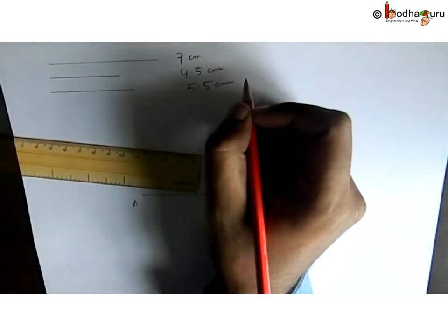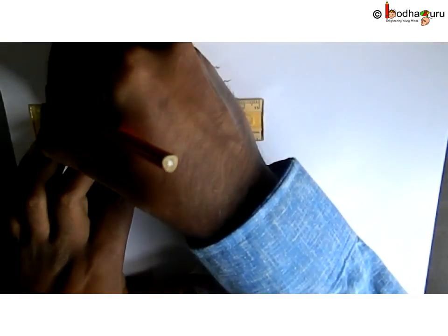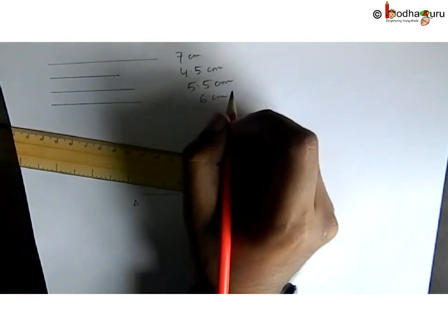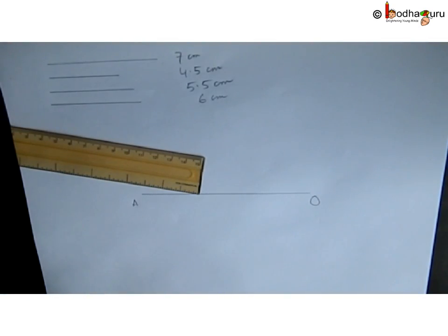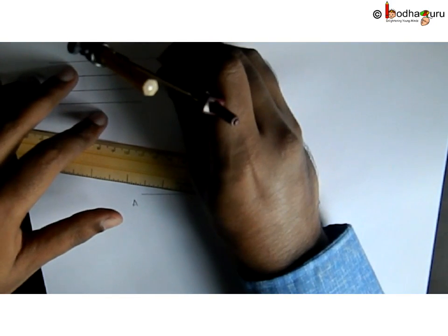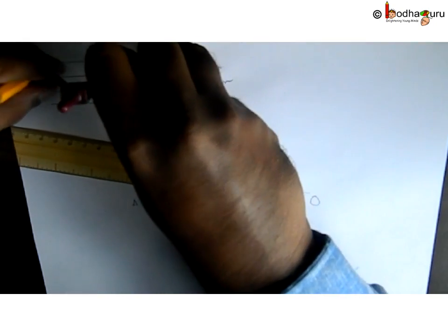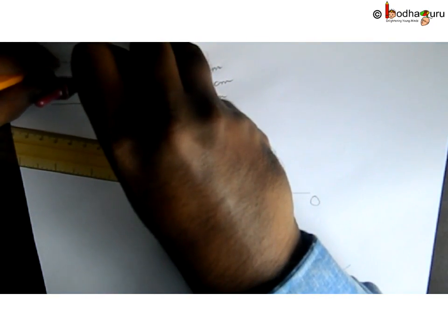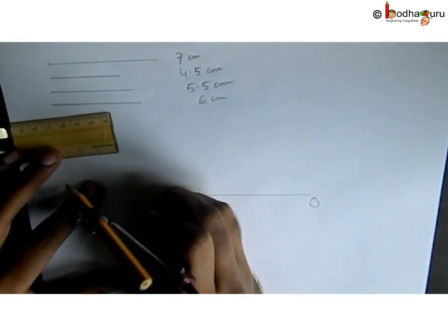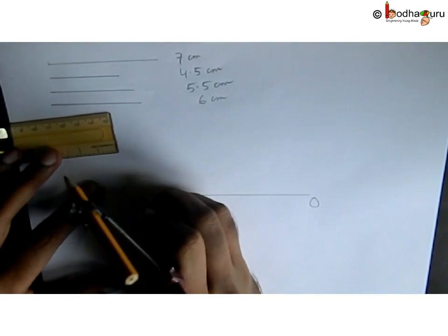These will act as the reference lines. We draw this thing at one corner of the paper. Now we measure 7 centimeter line segment using compass from this reference. Let's put the needle at A and make a small arc that crosses AO.